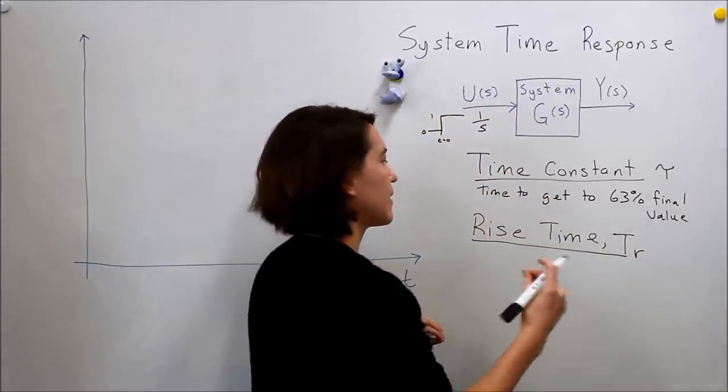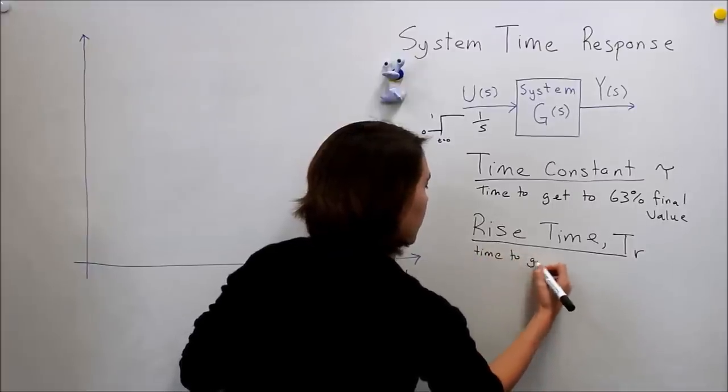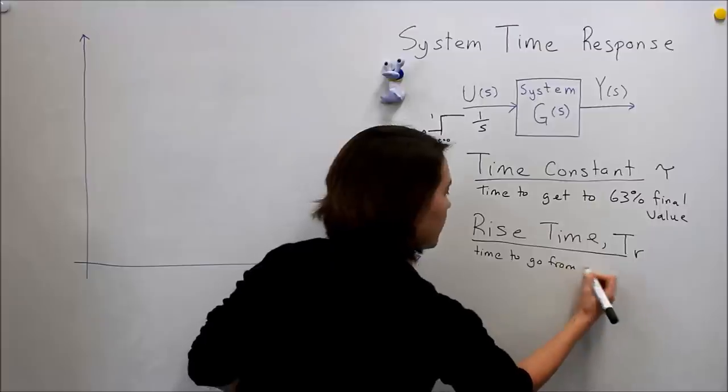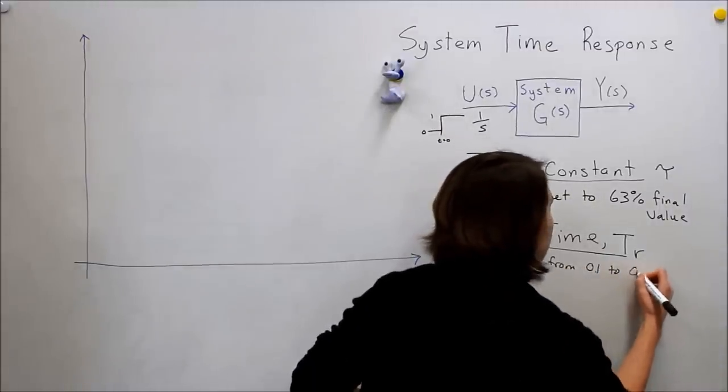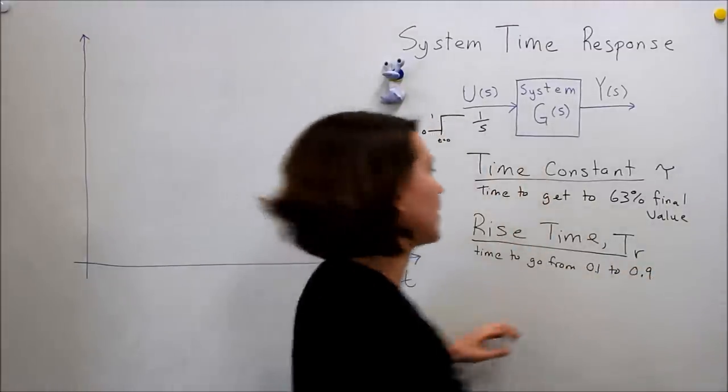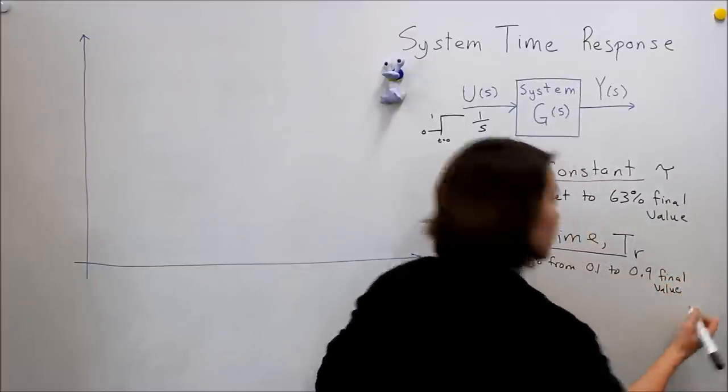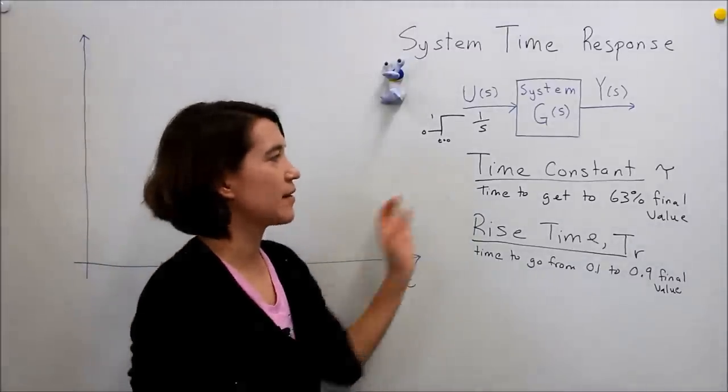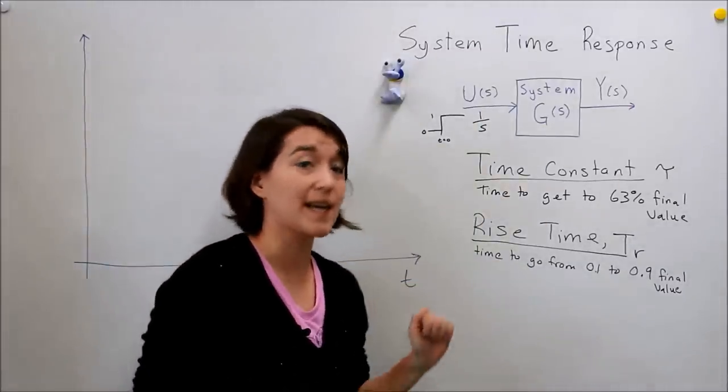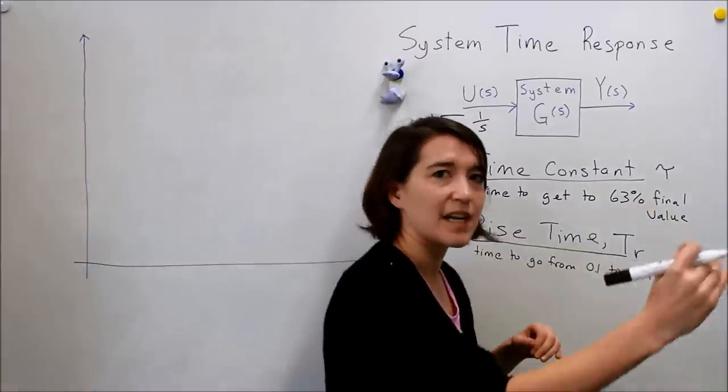And this is essentially the time that it takes, the time to go from 0.1, so 10% to 0.9, to 90% of final, of the final value. So that makes sense. How long does it take to go from the beginning to get to the value? How quickly does it rise? And we're looking at that 10 to 90% value.